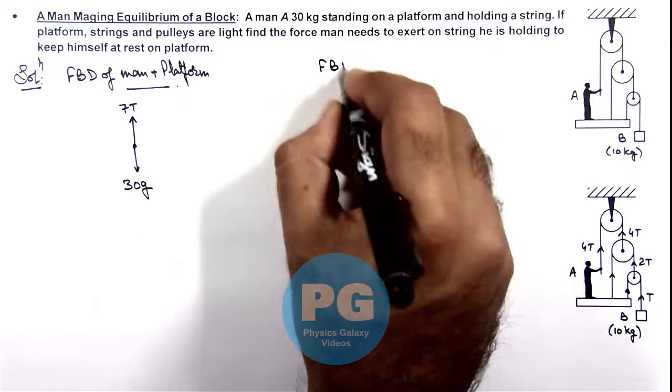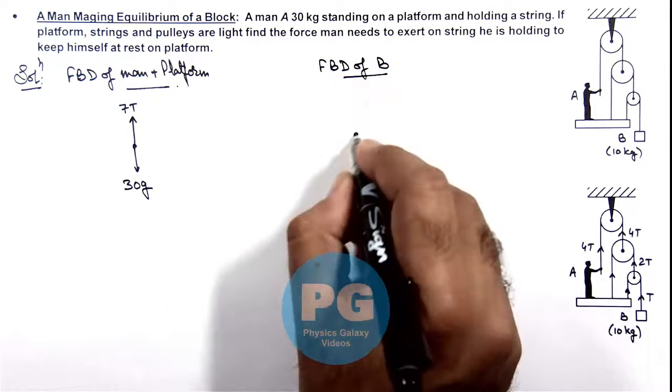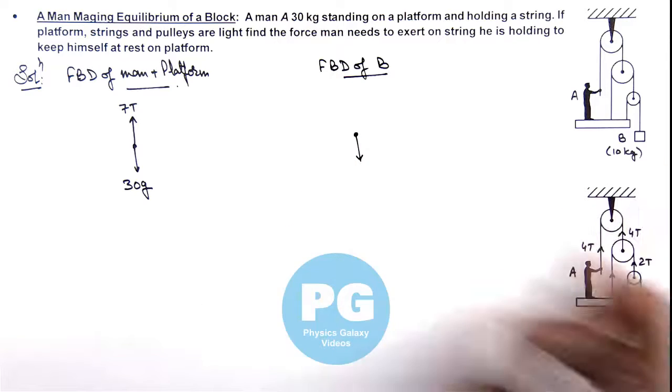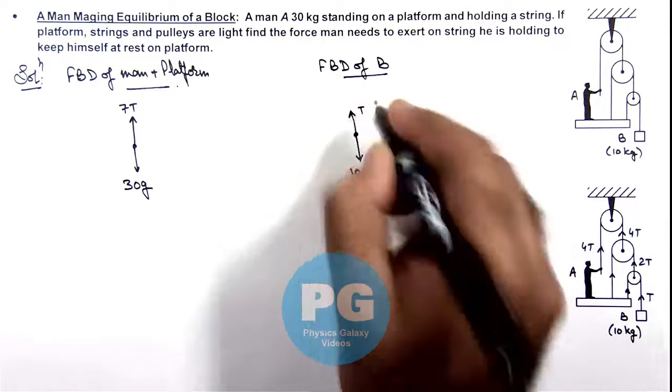Similarly, if we draw the free body diagram of block B, then it is experiencing its weight 10g in downward direction and a tension T in upward direction.